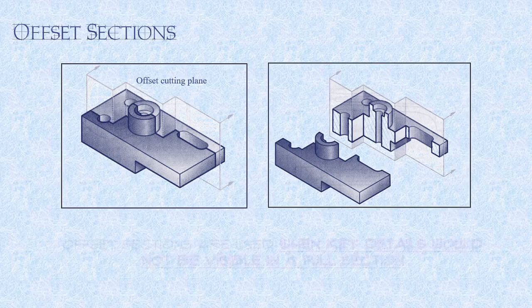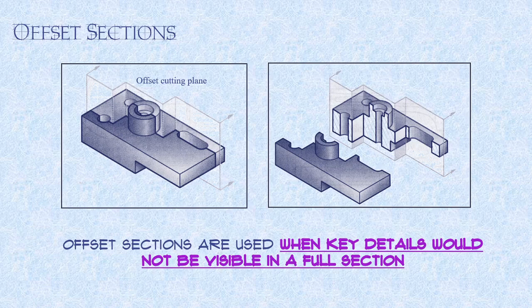And that's, once again, a full section. It'll cut all the way through the shape. Offset sections, on the other hand, what we've done is we've had to jog through.